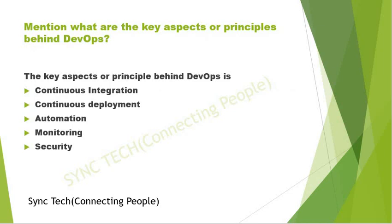The last question asked in the interview: what are the key aspects of the principles behind DevOps? The principles behind DevOps are continuous integration, continuous deployment, automation, monitoring, and security. These are the interview questions which were asked in round one. I'll be coming up with round two interview questions, as I have cleared round one and moved to round two. What interview questions I faced in round two will be explained in my upcoming video.